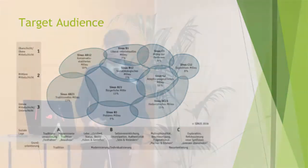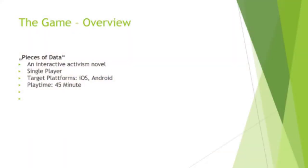So what is Pieces of Data? It's an interactive activism novel. That means you have small digital interactions throughout the game. It's a single player game for iOS and Android. You play it on your smartphone. It's approximately 45 minutes to one hour to play.